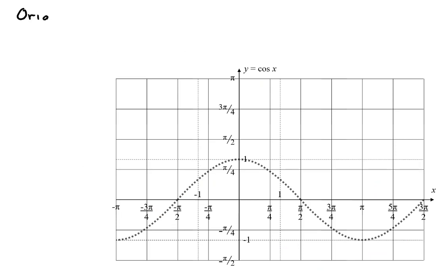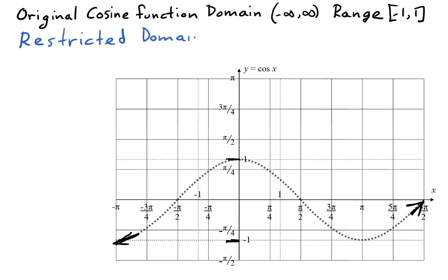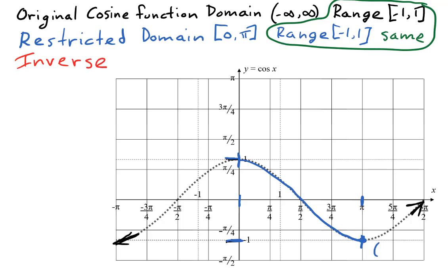Now we graph the inverse of the cosine function. The original cosine has a domain from negative infinity to infinity and a range from negative one to one. We restrict it to the section from x equals zero to x equals pi — that section is one-to-one and has a range from negative one to one, the same as the original cosine. Now we plot some points: the cosine contains the point (pi, −1), so the inverse must contain (−1, pi). The cosine passes through (pi/2, 0), so the inverse passes through (0, pi/2). And the cosine contains the point (0, 1), so the inverse must contain (1, 0).